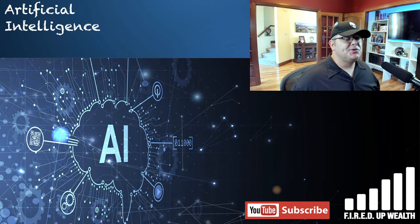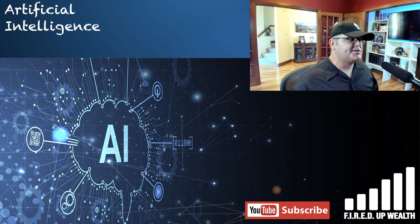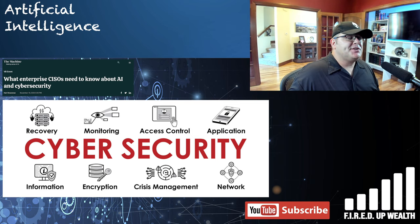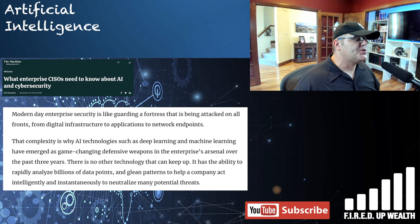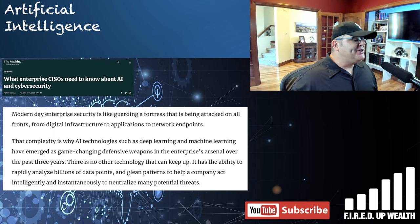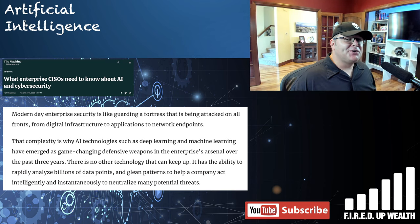I'm doing this in reverse order — this will be number eight and the next one number nine. This article from VentureBeat asks: what do enterprises need to know about AI and cybersecurity? Modern day enterprise security is like guarding a fortress attacked on all fronts — from digital infrastructure to applications to network endpoints. That complexity is why AI technologies such as deep learning and machine learning have emerged as game-changing defensive weapons, able to rapidly analyze billions of data points and neutralize threats instantaneously.